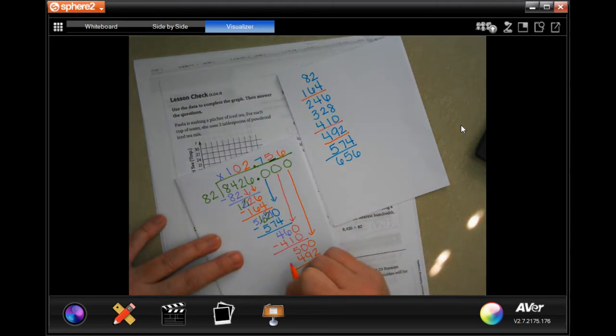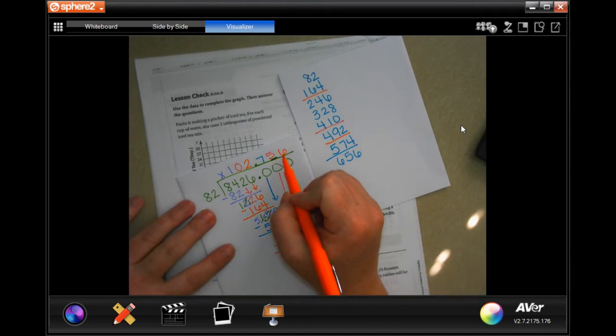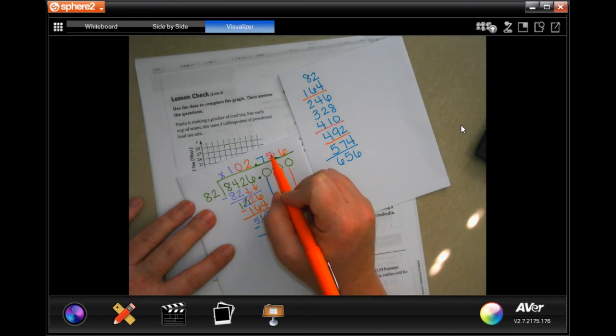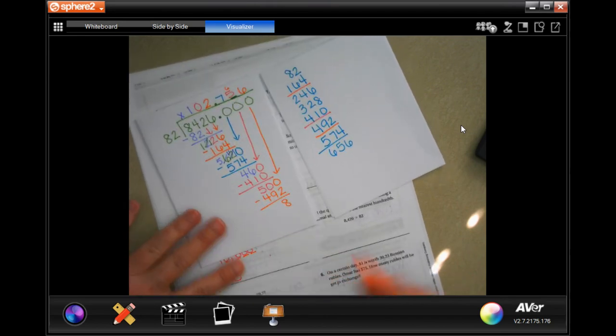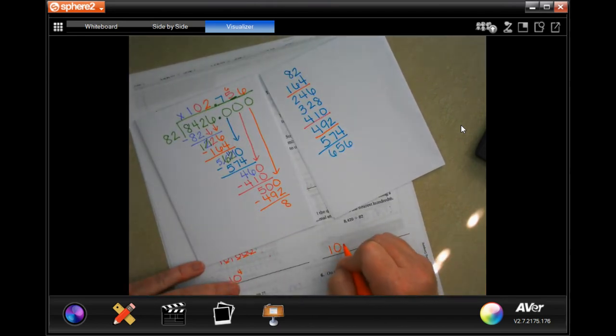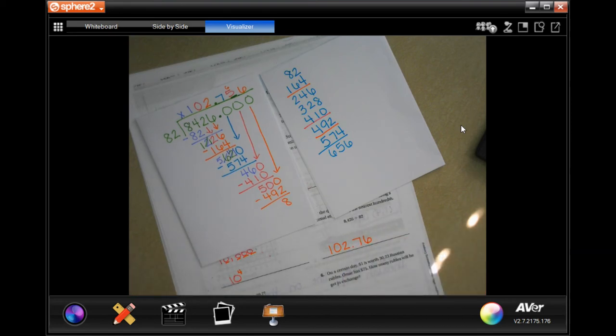Now I'm going to get eight when I subtract. That's definitely bigger than five, so when we round, this six is going to go up to a six. One hundred two point seven six.